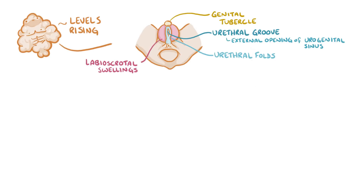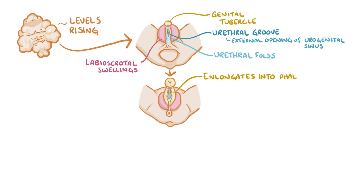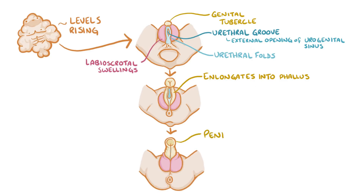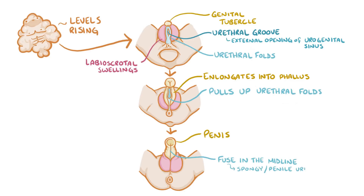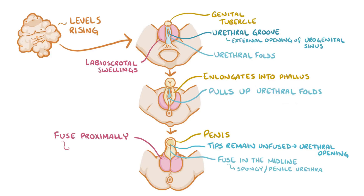Once dihydrotestosterone reaches these structures, it makes the genital tubercle elongate into a phallus, which will eventually be the penis. The elongating genital tubercle pulls up the urethral folds which fuse in the midline, forming the spongy or penile urethra. The tips of the urethral folds remain unfused, and that forms the external urethral opening at the distal tip of the penis. The labioscrotal swellings also fuse proximally to form the scrotum, which eventually houses the testes.